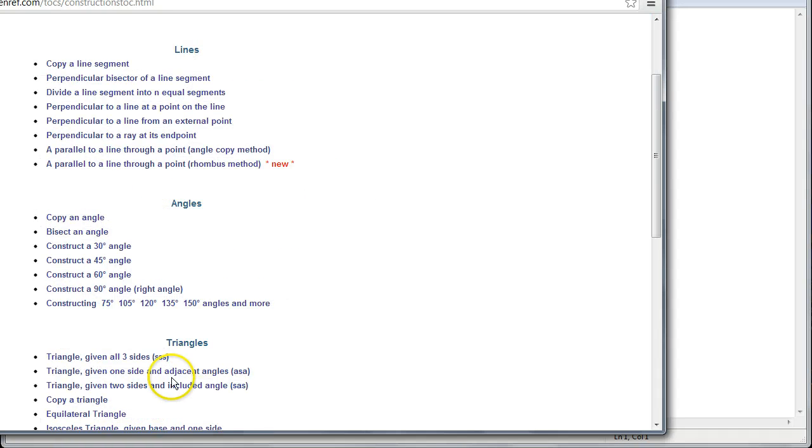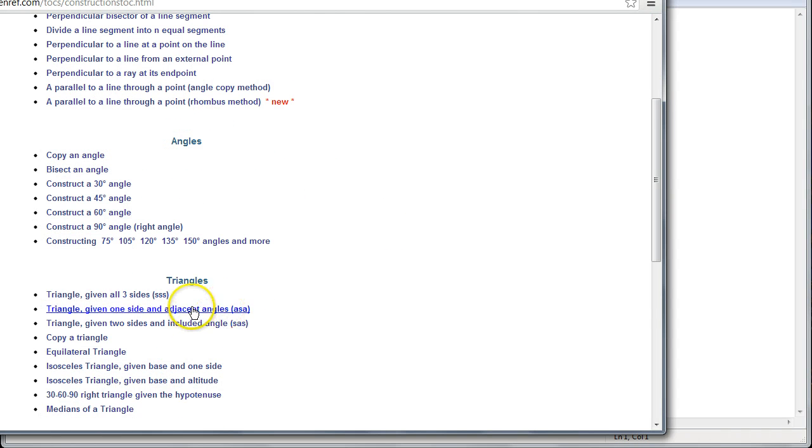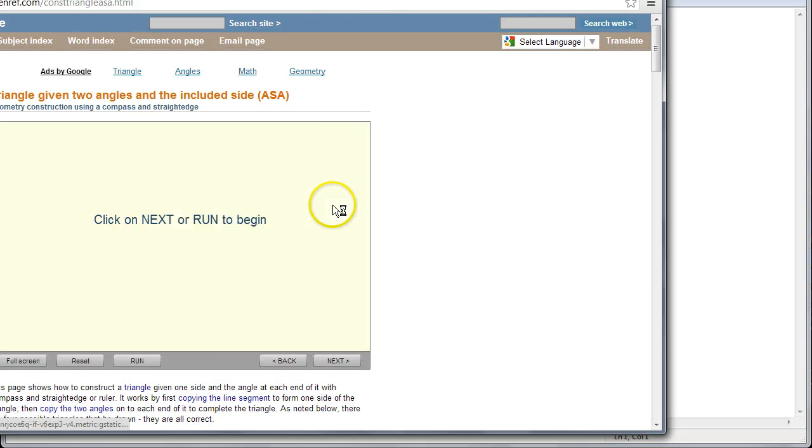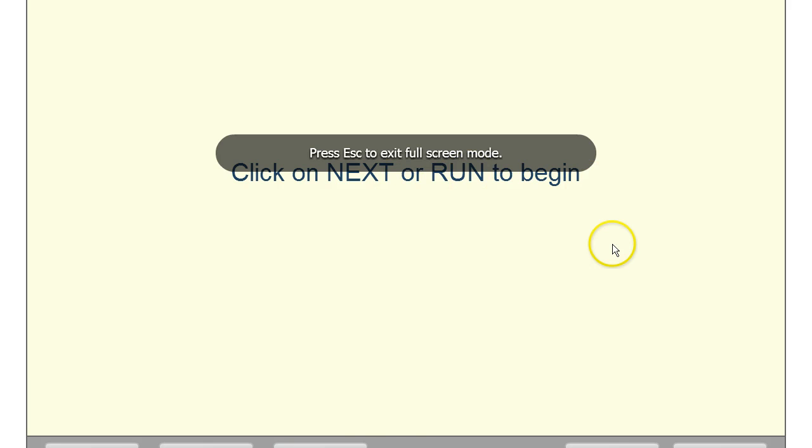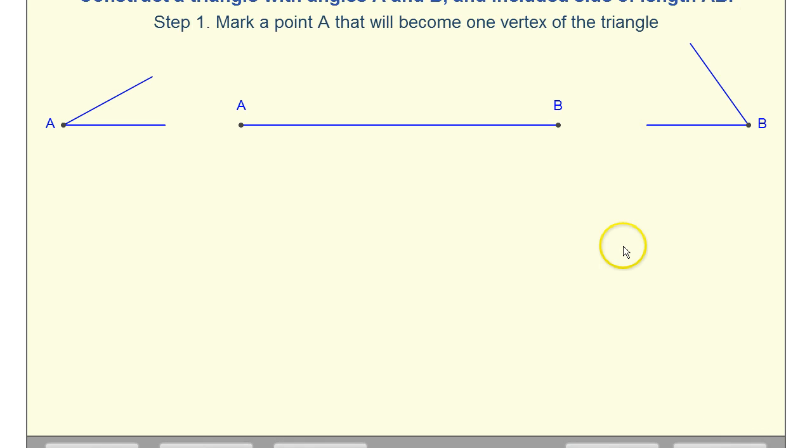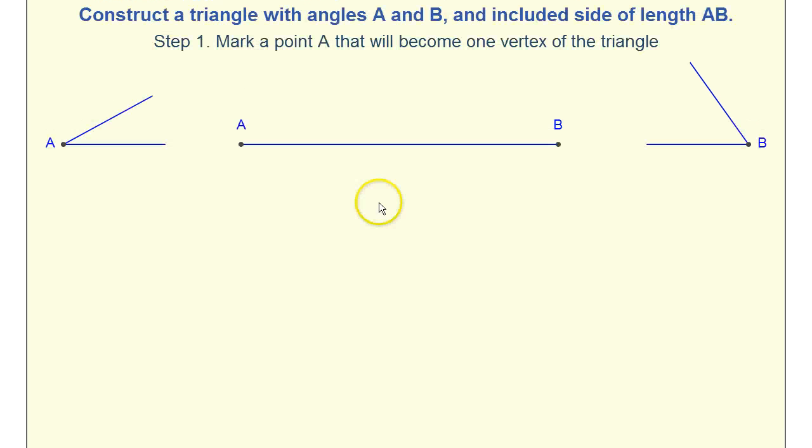Go down here where it says triangles. Let's start with angle-side-angle. Click that and then click full screen. It's going to give you two angles and a side. Does anybody have any idea how you could actually construct this triangle using these two angles and this one side?